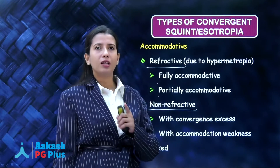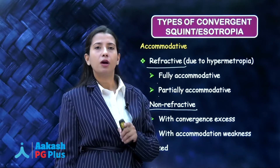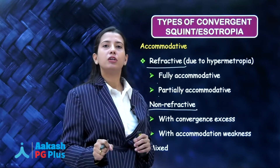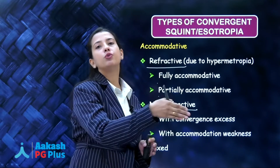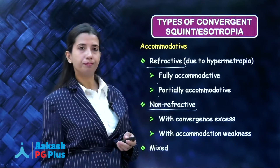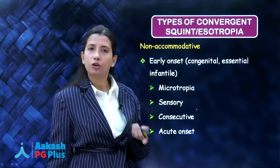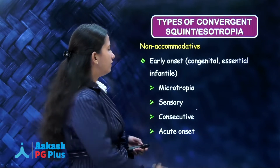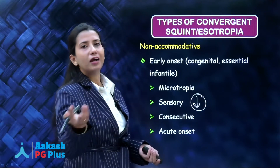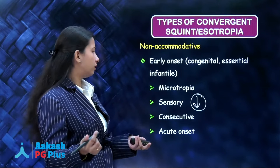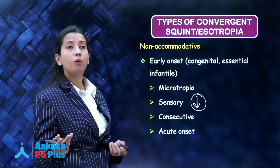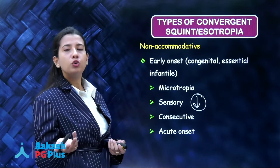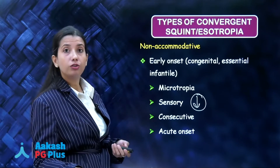Accommodation weakness means that though only one diopter of accommodation is needed, the muscles are weak, so the brain sends more innervation for accommodation, and that same innervation goes to the medial rectus, causing the eye to move inwards. Other causes of concomitant esotropia include congenital, consecutive, sensory deprivation where the eye can't see and moves inward, and acute onset esotropia, such as after typhoid fever, where muscles become weak, fusion breaks, and the patient develops squint.